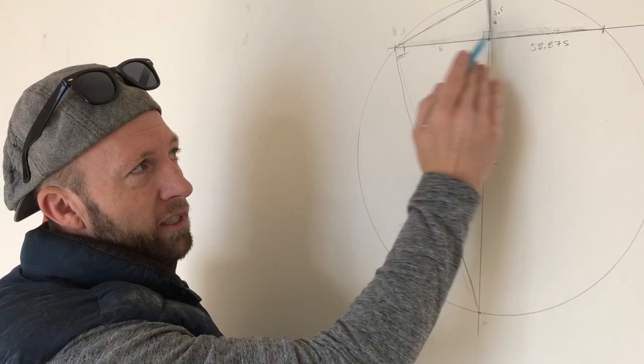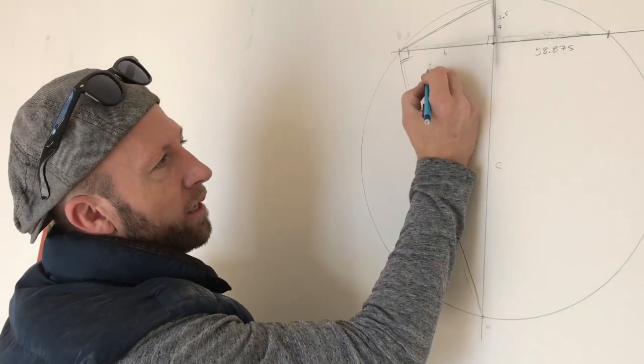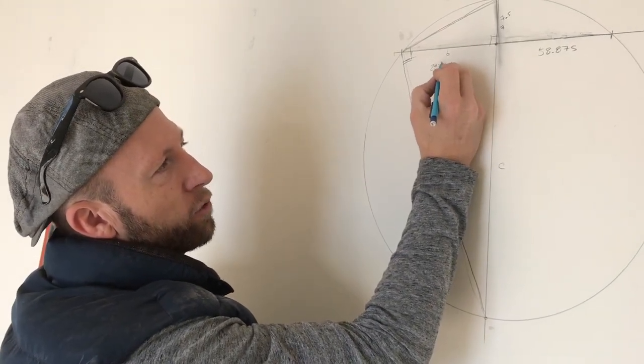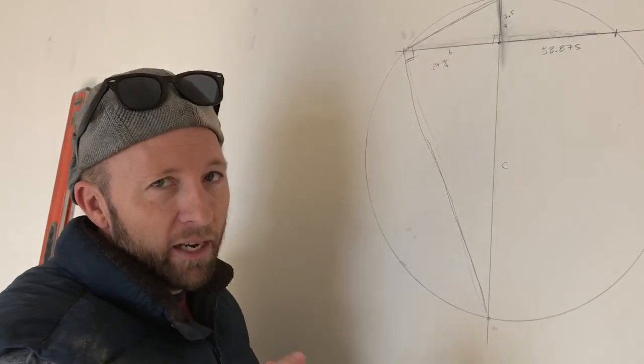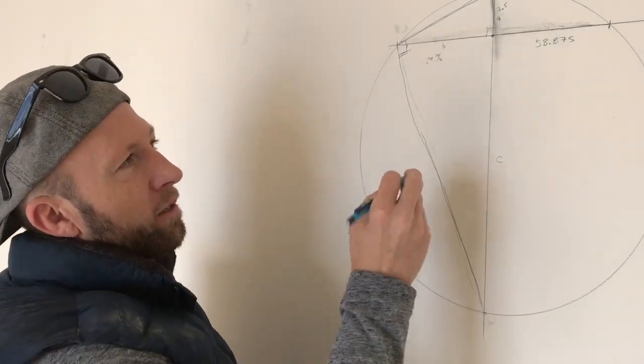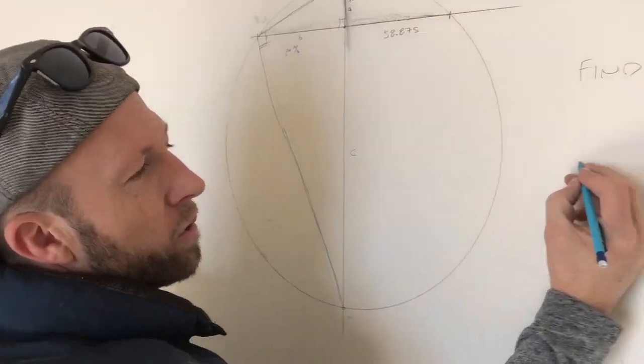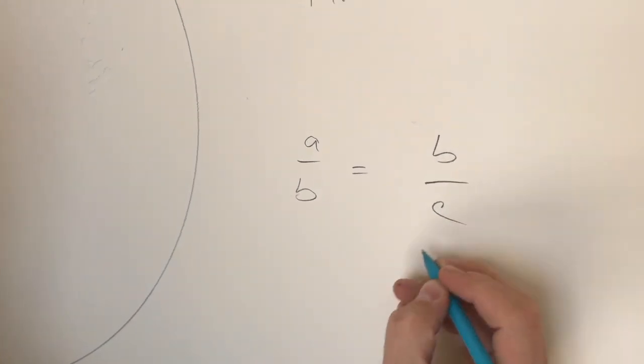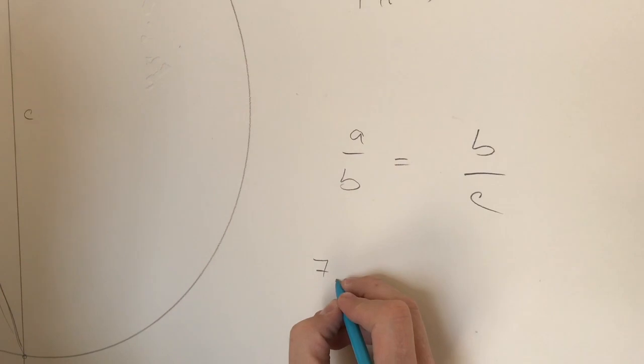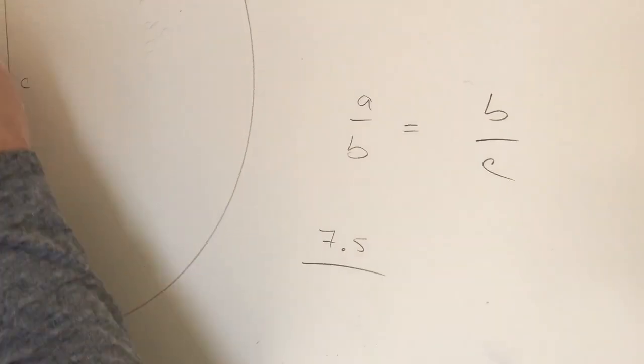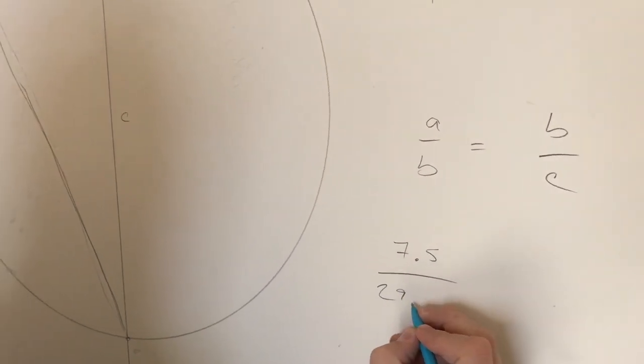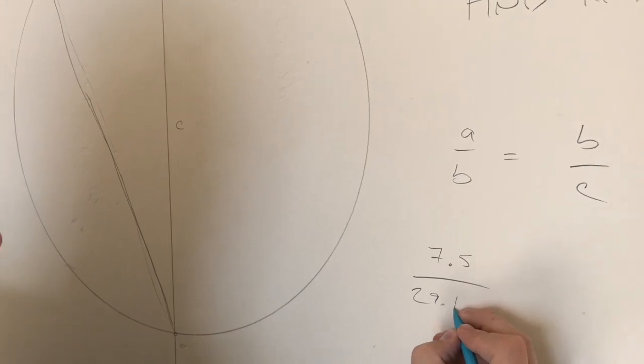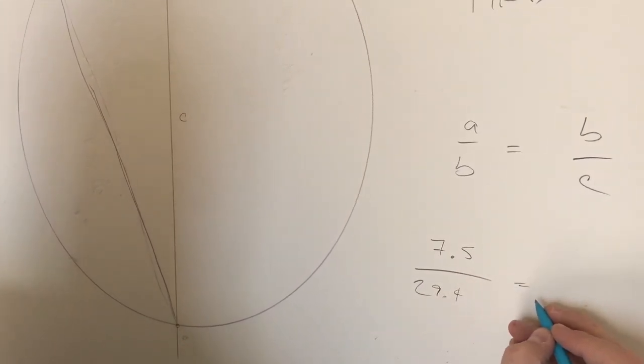So it'd be 29 and 7/16. So I know that the ratio of a to b equals the ratio of b to c. So if I say 7.5 over 29 and 7/16, which is 0.4 or something, is equal to 29.4 whatever that is over c.